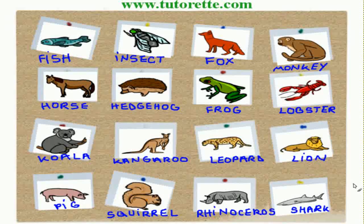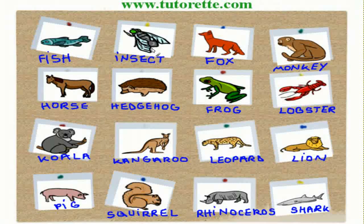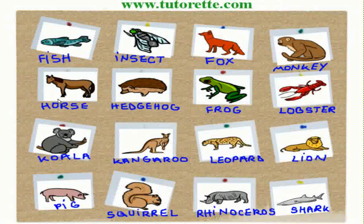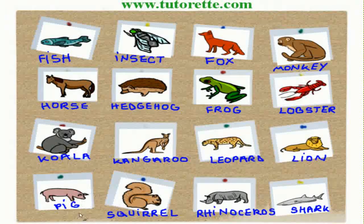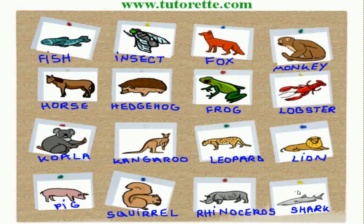And now we'll repeat the words one more time. Fish. Insect. Fox. Monkey. Horse. Hedgehog. Frog. Lobster. Koala. Kangaroo. Leopard. Lion. Pig. Squirrel. Rhinoceros. Shark. This concludes part 2 of the video.